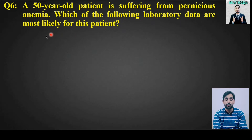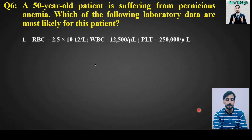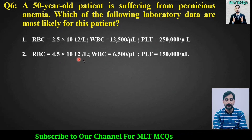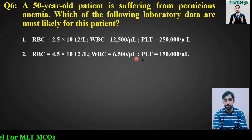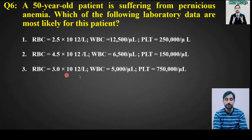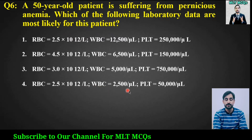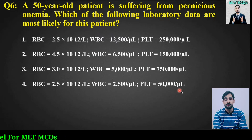MCQ number 6: A 50-year-old patient is suffering from pernicious anemia. Which of the following laboratory data are most likely for this patient? Options are: RBC count 2.5×10¹²/L, WBC 12500/µL, platelet 250000/µL; or RBC 4.5×10¹²/L, WBC 6500/µL, platelet 1500/µL; or RBC 3.0×10¹²/L, WBC 5500/µL; or RBC 2.5×10¹²/L, WBC 2500/µL, platelet 50000/µL.